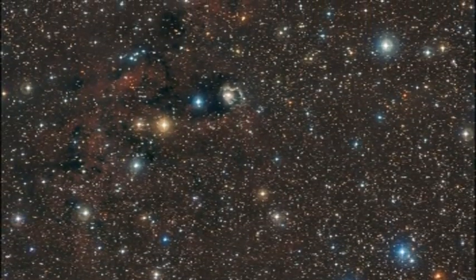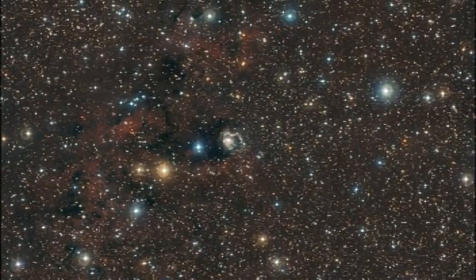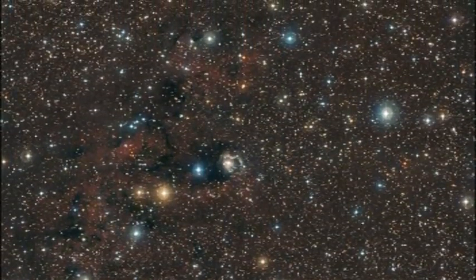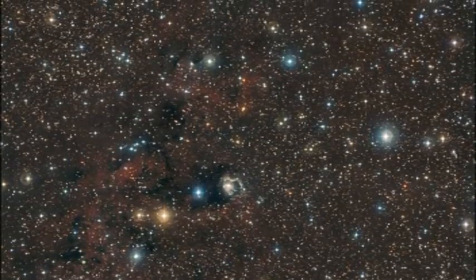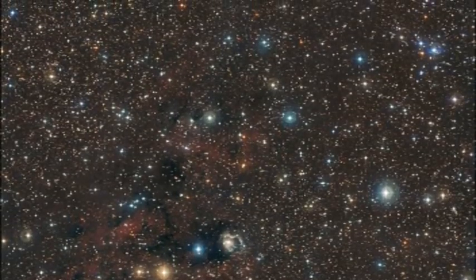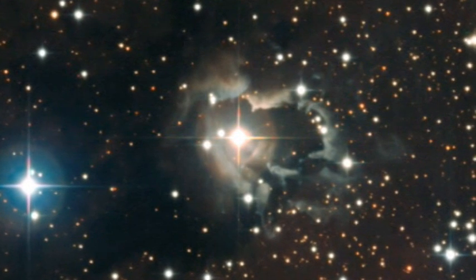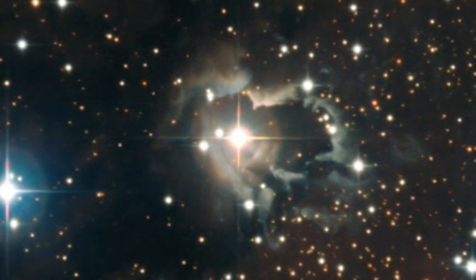ESO has just released a stunning new image of a field of stars towards the constellation of Carina. This striking view is ablaze with a flurry of stars of all colors and brightness, some of which glow against a backdrop of gas and dust clouds. A complex nebula created by previous violent ejections surrounds an unusual star in the middle of this field.